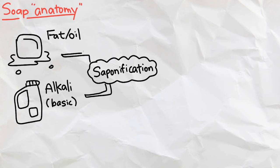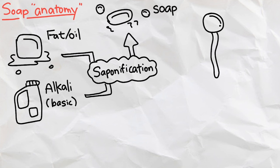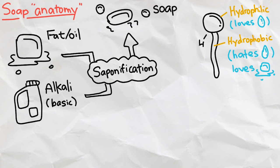Through a chemical reaction called saponification, soaps are made with each soap molecule consisting of a head that is hydrophilic, which loves water, and a tail of a long chain of carbon and hydrogen that is hydrophobic, which hates water but loves oils and fats.